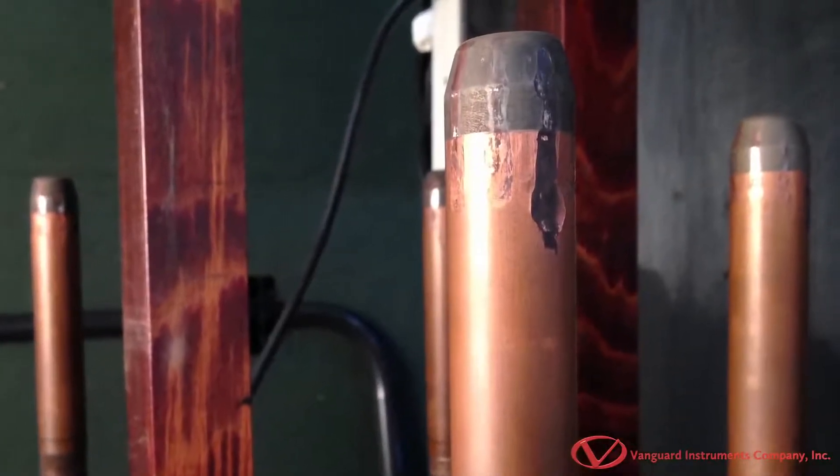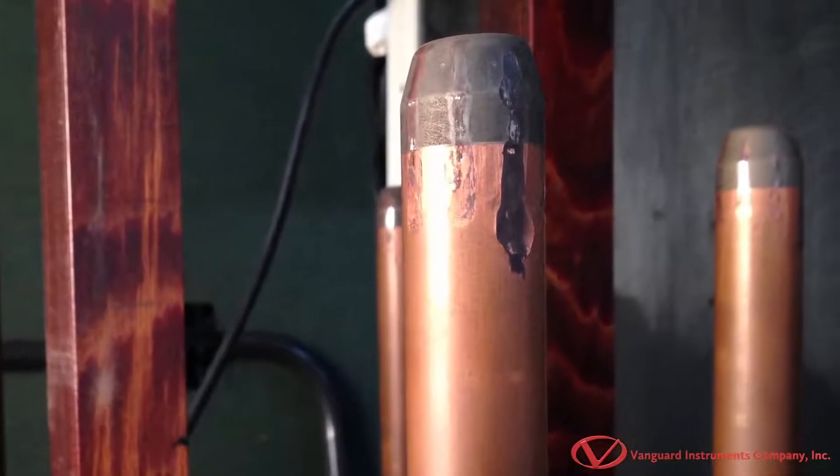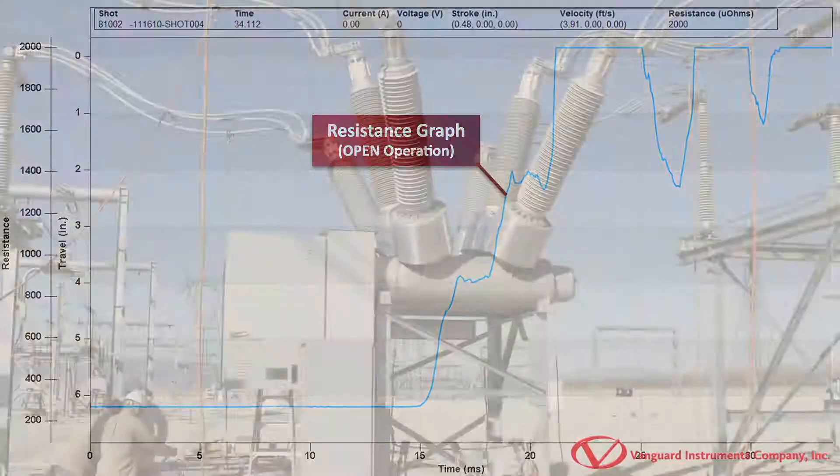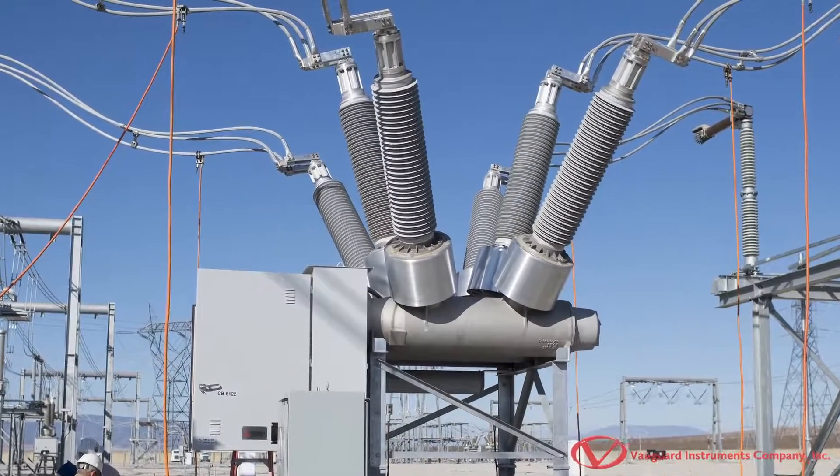Contact wear is also another important factor that can affect a breaker's performance. A dynamic resistance test can be performed and the resistance chart can be used to analyze the breaker's contact condition during the circuit breaker operation.